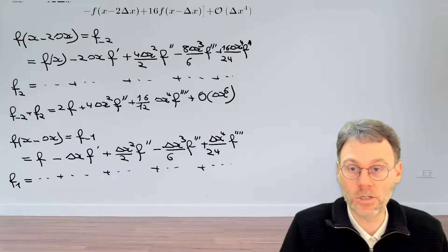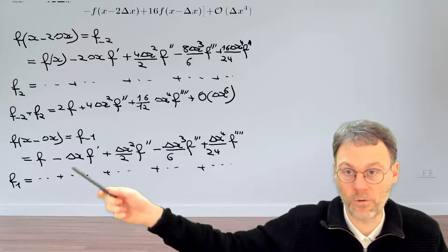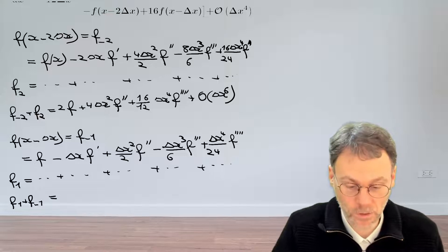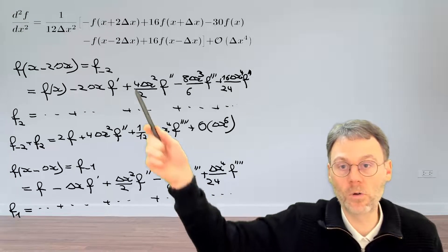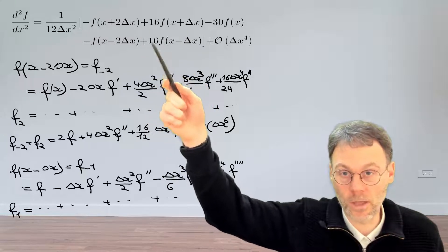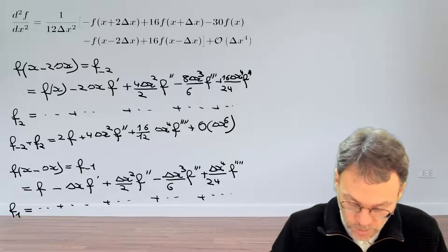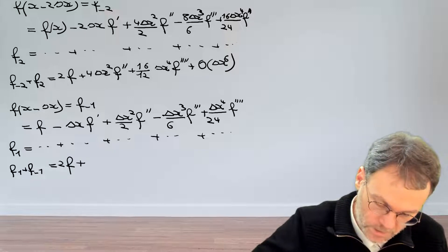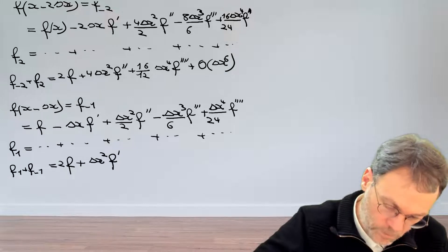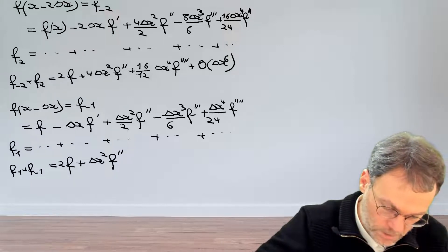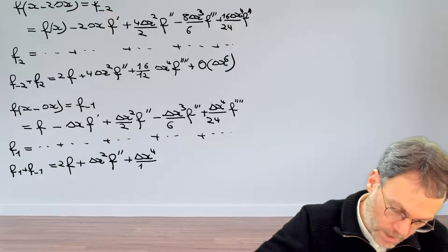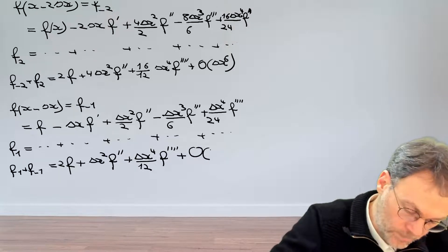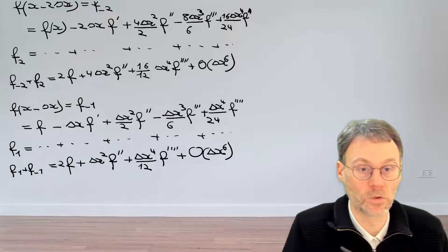Just as before, to get rid of the uninvited guest — the f prime term — we sum the two equations: f1 plus f minus 1. Looking at where we need to go, the coefficients of the relevant terms are the same, so summing is the right approach. Summing gives us 2f, the f prime term cancels, then delta x squared times f double prime. The third order derivative cancels, and we have Δx to the power of 4 divided by 12 times the fourth derivative. The fifth order cancels, leaving a term proportional to Δx to the power of 6.